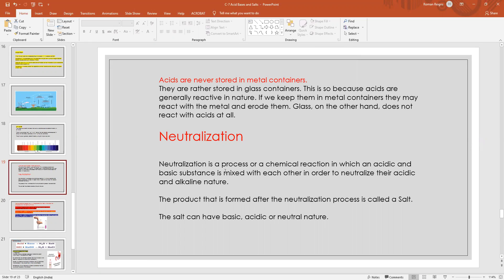You will never see that acids are stored in metal containers. They are stored in glass containers because acids react with metals and corrode them. That's why acids are not stored in metal containers.